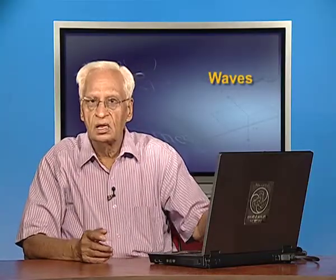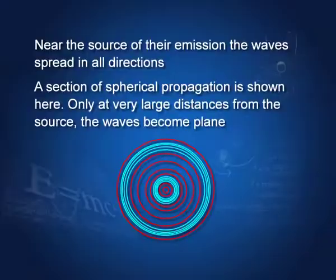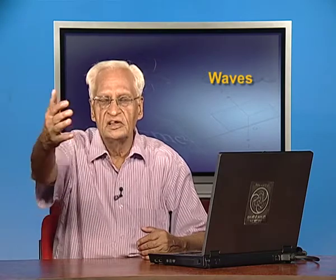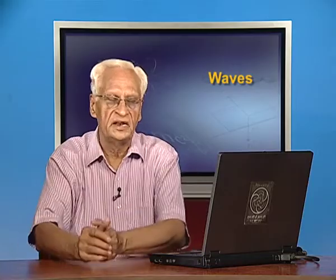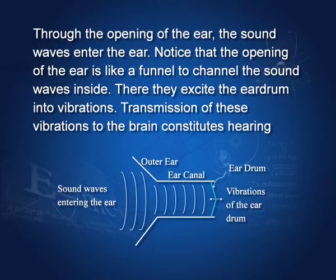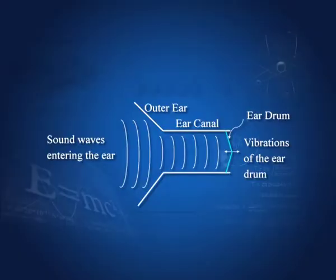Near the source of emission, the waves travel in all directions. In fact, there is a spherical wavefront — they travel in all directions, and I have shown you here just a section of that spherical wavefront. When we speak, the wave travels to the listener. The sound waves enter the ear. The outer ear is a sort of funnel to collect the waves into the ear, which are then funneled through the ear canal, where they vibrate the ear drum. The drum sends a signal to the brain, and we say we have heard something. This is the process of hearing.